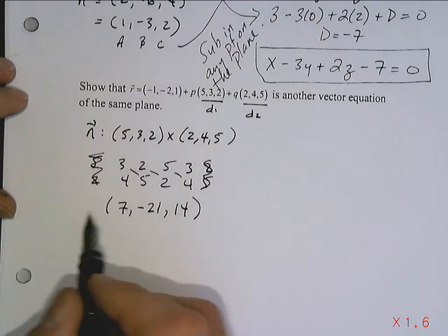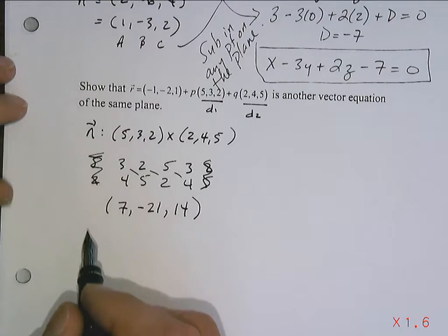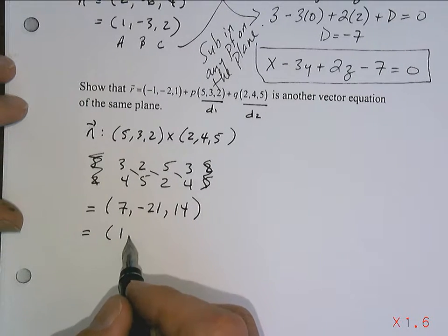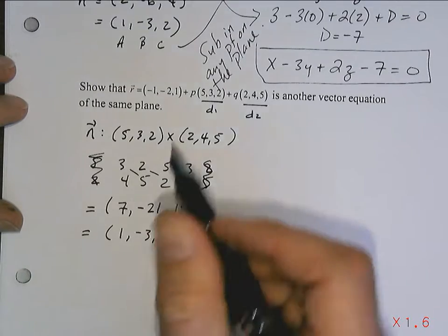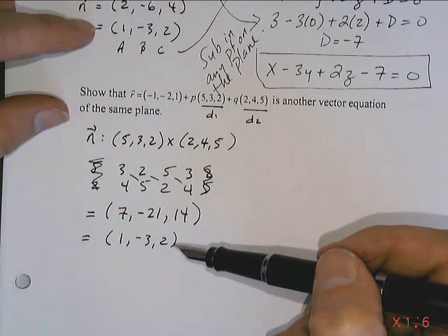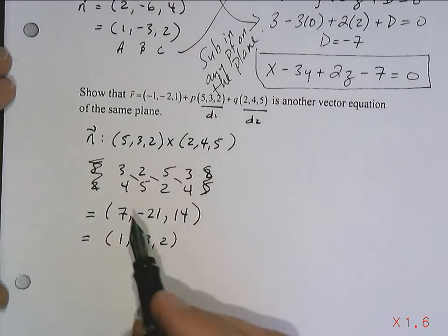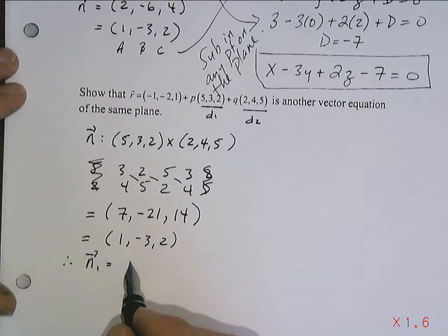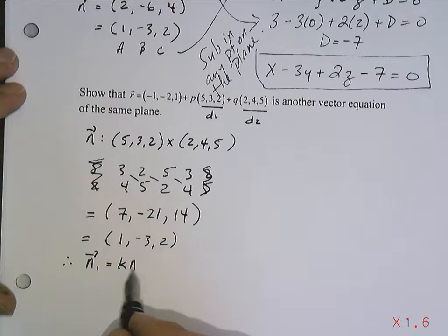All right, now look at that normal. That's a pretty normal. But what I am going to say is it can be reduced. And I can divide everything by 7 to get (1, -3, 2), which looking up, notice the normals are identical. So therefore, normal 1 equals a scalar multiple of normal 2. That scalar multiple could be 1. They could be identical. But what I am saying is that they have the same normals.